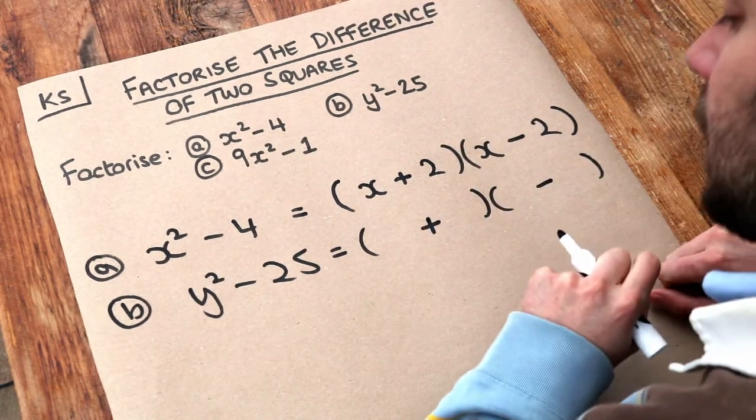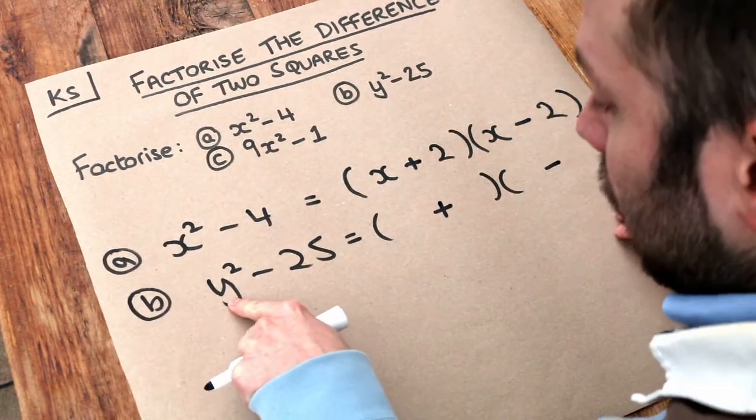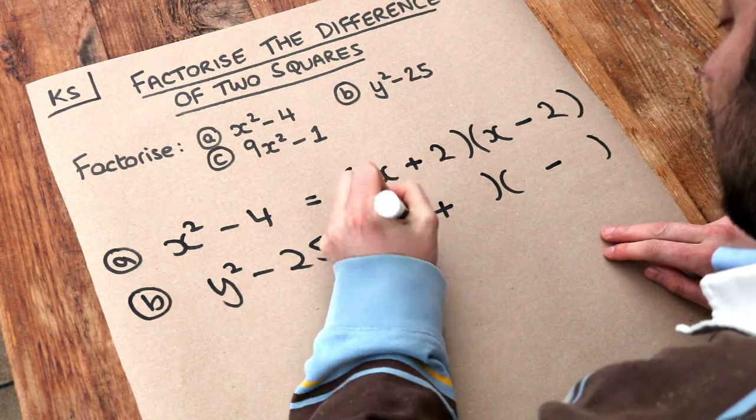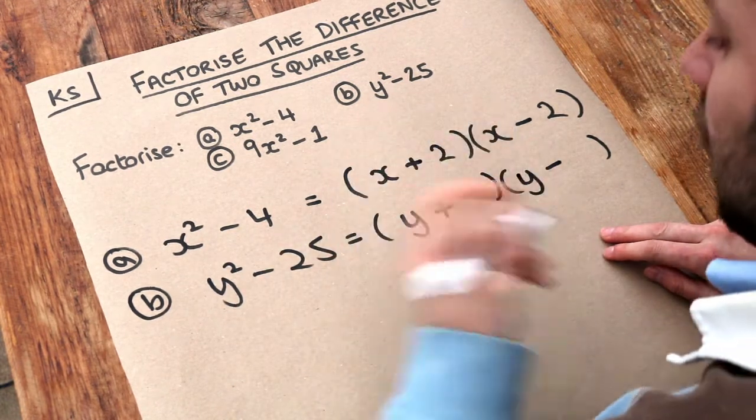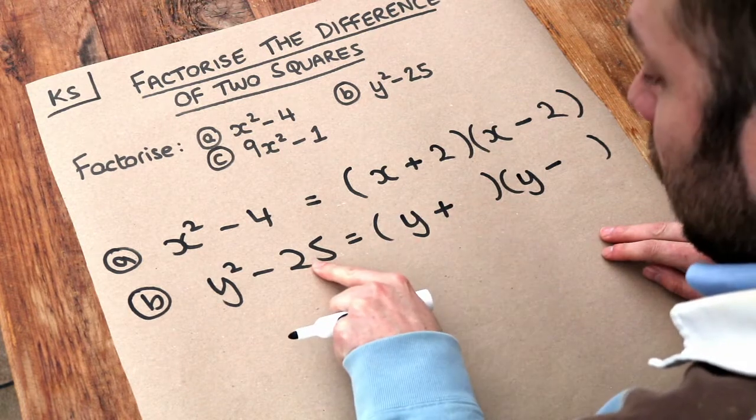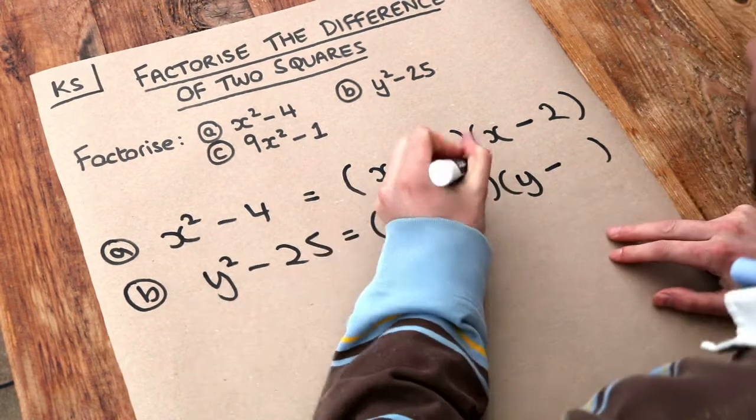Or minus and plus, doesn't really matter. Then what's the square root of the first term? What's the square root of y squared? Well, it's y because y times itself is y squared. And what's the square root of 25? Forgetting this minus, the square root of 25 is 5.